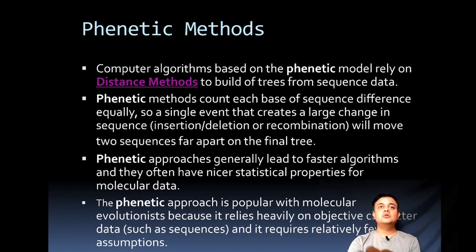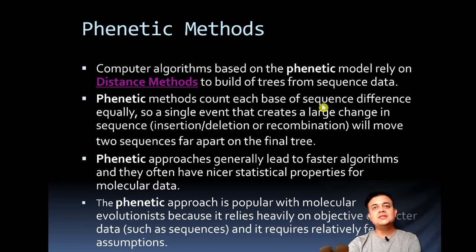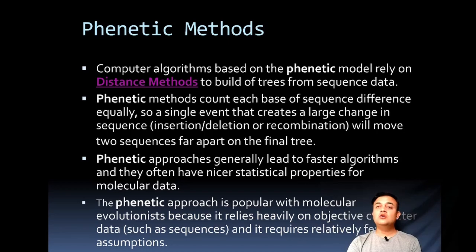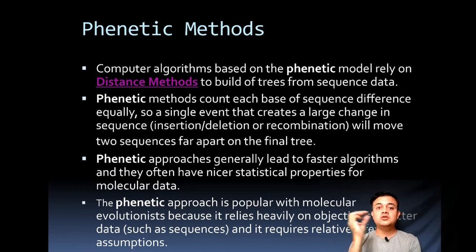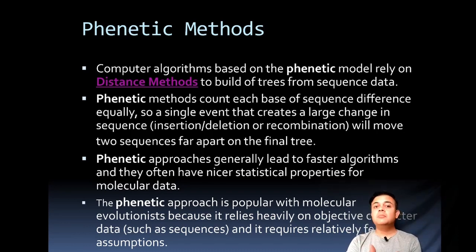The input for phenetic methods is a distance matrix of molecular sequence alignment. Phenetic methods count each base difference equally, so a single event creating a large sequence change — such as an insertion, deletion, or recombination — will move two sequences far apart on the final tree, because each mutation is given equal probability. However, frameshift mutations have a huge impact and should have differential weight, which phenetic methods don't account for, making them less accurate.